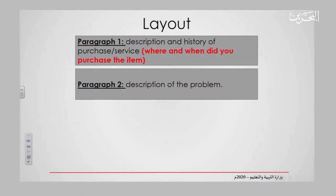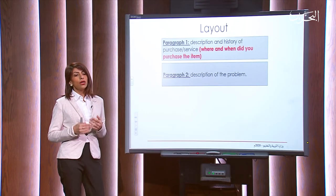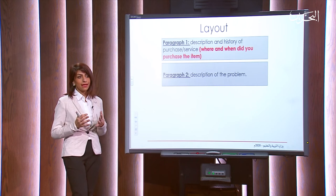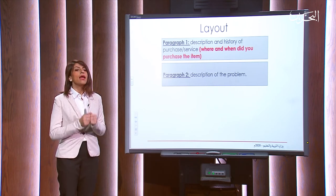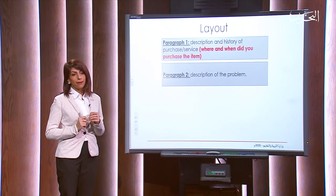In paragraph two, you will give a description of the problem. This is a very important part. You are going to tell exactly what you ordered and what problem you are now facing with the item. The problem differs from case to case — it could be one of the problems we mentioned previously, such as different size, different color, or different from the picture you saw on the website. Whatever the problem is, make sure you write a full description about it.